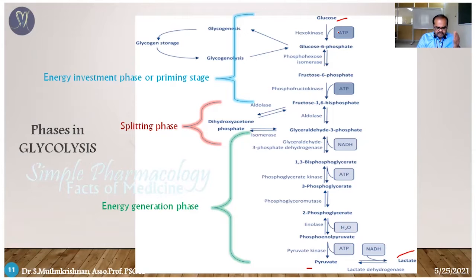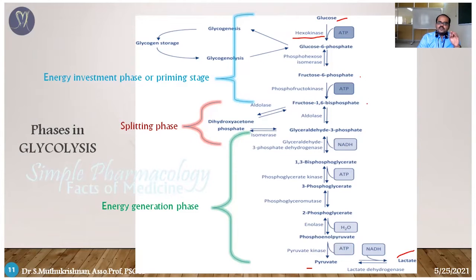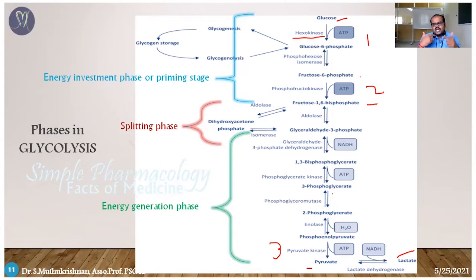Out of the 10 steps in glycolysis, three steps are irreversible. First: glucose to glucose-6-phosphate, catalyzed by hexokinase or glucokinase — irreversible. Second: fructose-6-phosphate to fructose-1,6-bisphosphate — also irreversible. Third: phosphoenolpyruvate to pyruvate — irreversible. Once glucose is converted into glucose-6-phosphate it cannot revert to glucose in the glycolysis step, but in gluconeogenesis these three steps are bypassed by different mechanisms.